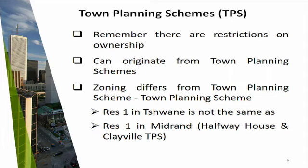So if I say my ownership is restricted, then it's going to be restricted by some kind of act or some kind of town planning scheme. The town planning scheme is what the municipality envisages for a specific area — over which they determine which area will have industrial use, where residential, where the agricultural holdings will be, and how that will develop over the years. Each municipal area has their own town planning scheme, and in that scheme they have different zonings.